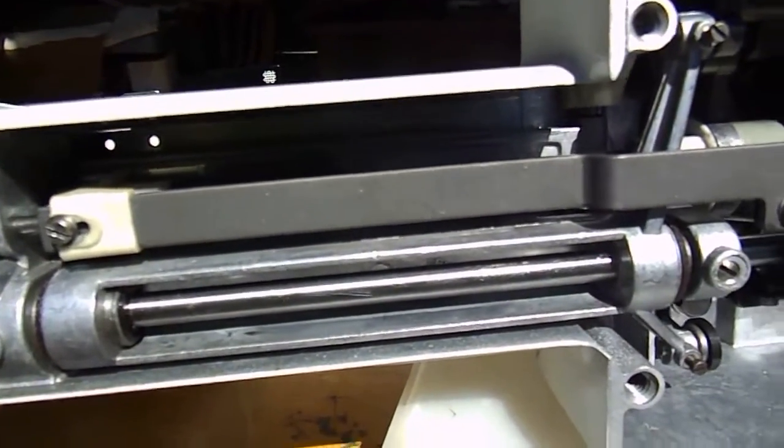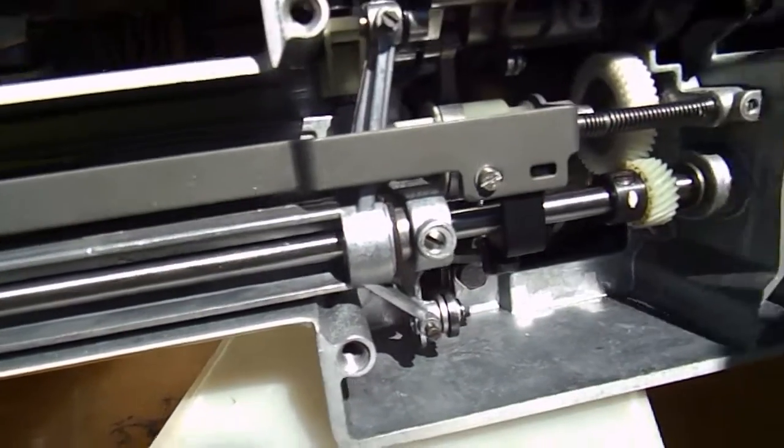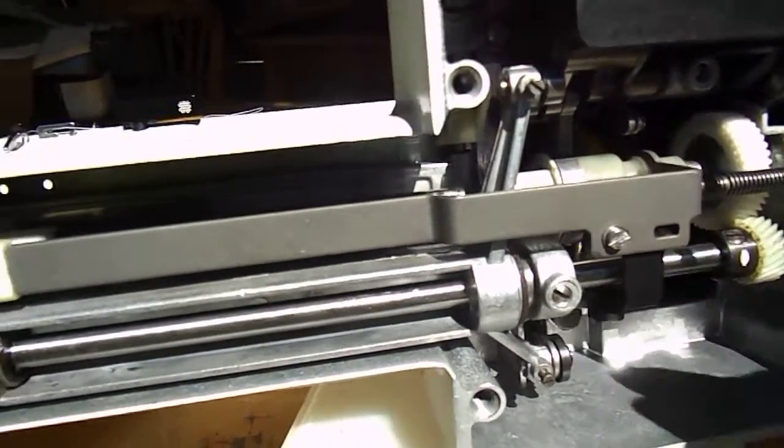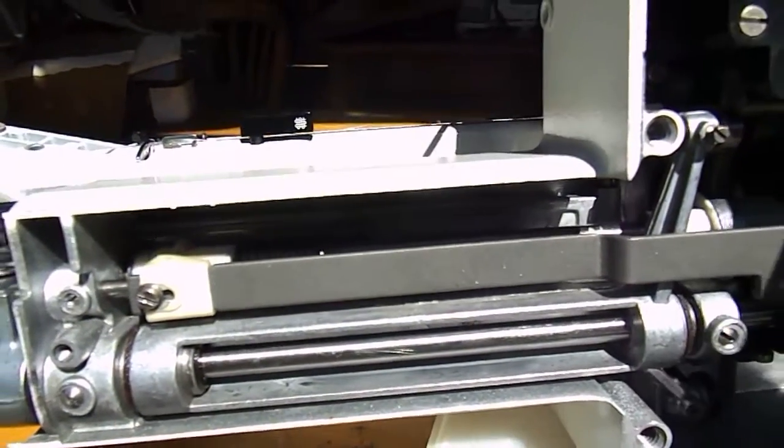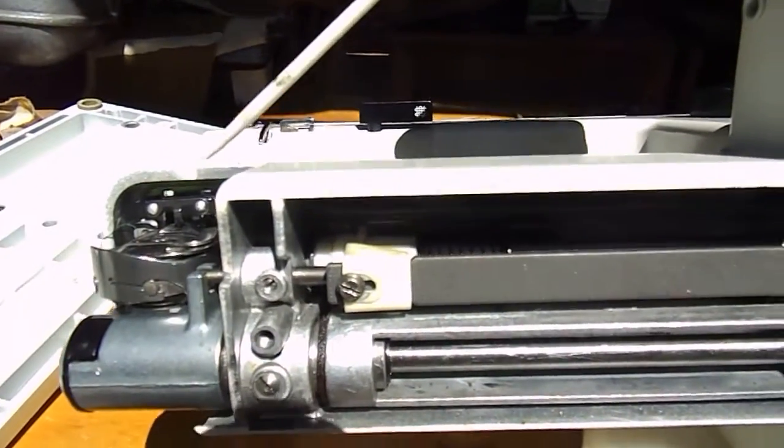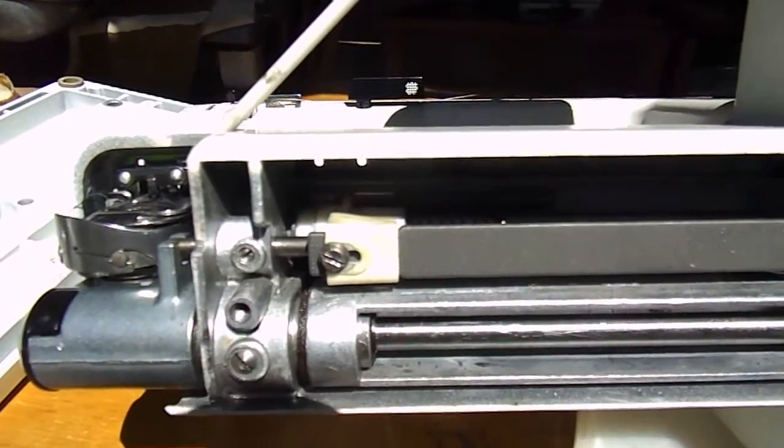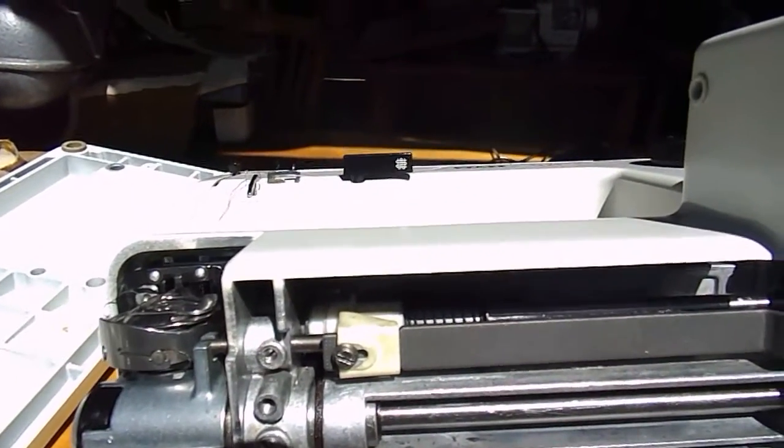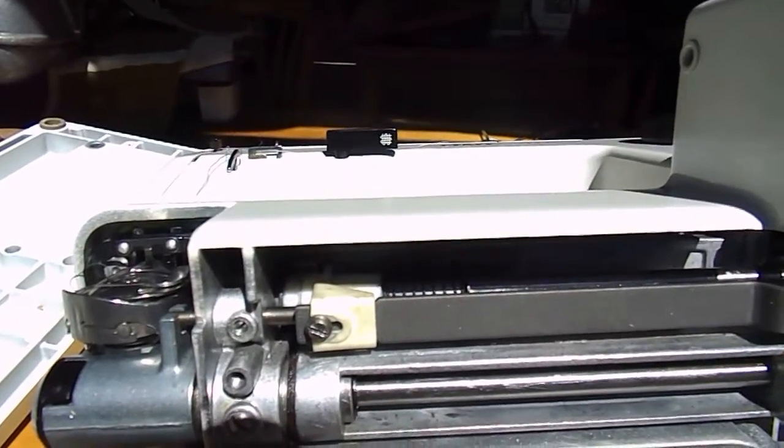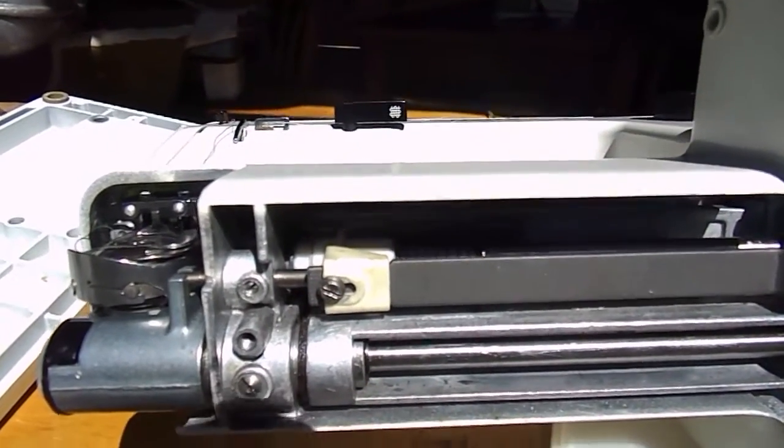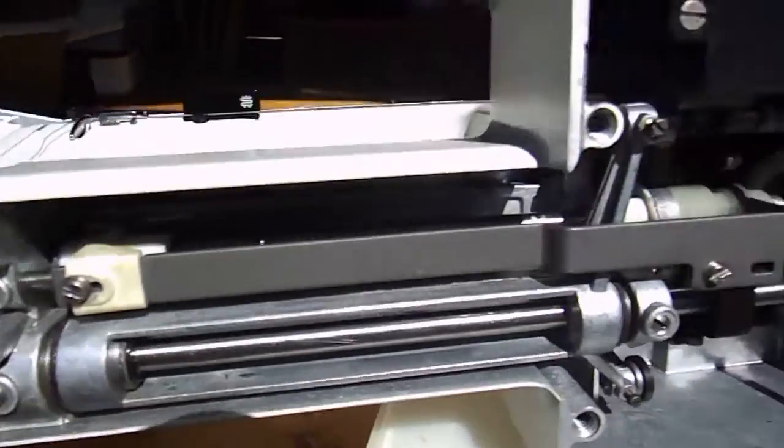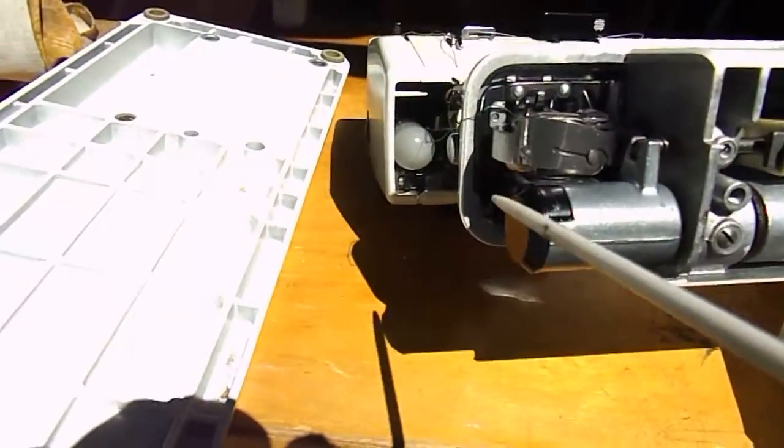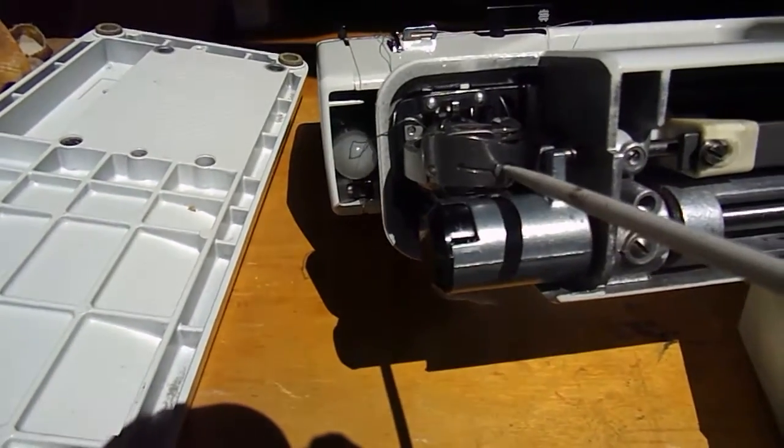So then you've got to time it. The way I timed it was I left the screws loose on here. I kept rotating the shaft until the actual needle was at the bottom and the actual feed dogs had taken out of play, halfway through out of play. So I then screwed that on and then we came and connected in the cog and did the timing there.